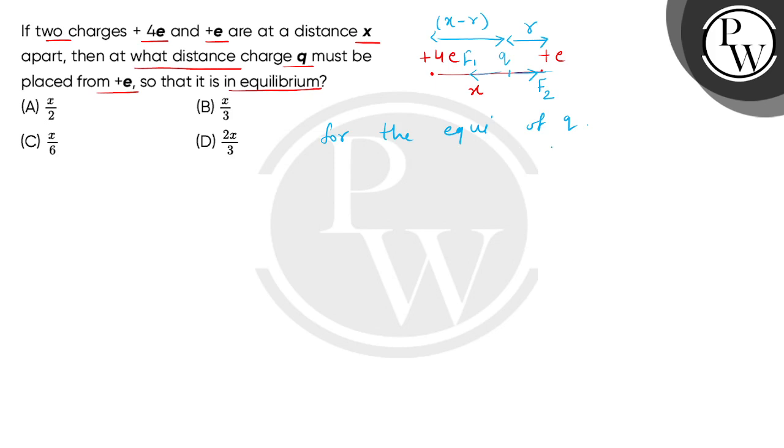Now for equilibrium, we can say that the magnitude of f1 is equal to the magnitude of f2, because we have two vectors.